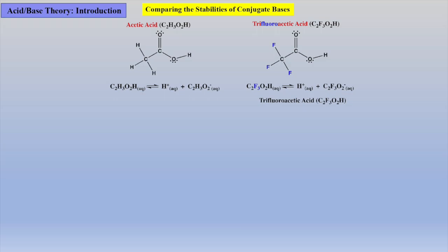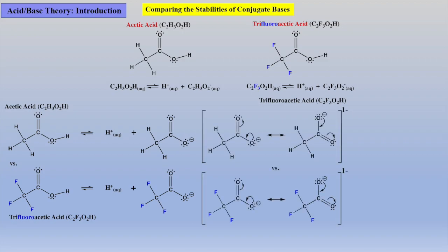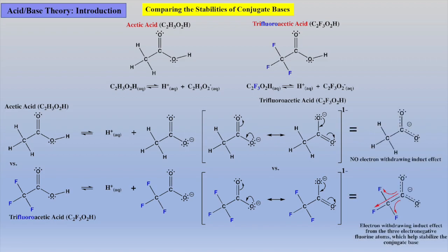As mentioned earlier, acid strength is proportional to conjugate base stability. So let's compare stabilities of conjugate bases and see if we can predict which acid will be the stronger acid. When comparing the stabilities of the conjugate bases for acetic acid and trifluoroacetic acid, we see that both conjugate bases have the ability to stabilize the anion via resonance, indicated via double-ended arrow in brackets, which we can imagine as the hybrid structure on the right-hand side of the diagram, two partial double bonds within the carbonyl moiety. However, only the trifluoroacetate conjugate base has the ability to stabilize the anion by electron withdrawing inductive effects due to the more electronegative fluorine atoms via the sigma bond framework, indicated by the red arrows. Thus, trifluoroacetic acid is going to be the stronger acid due to the trifluoroacetate conjugate base being more stable when compared to acetate.